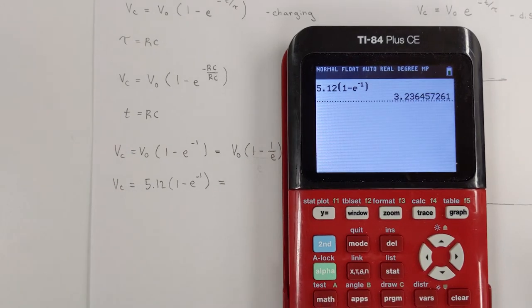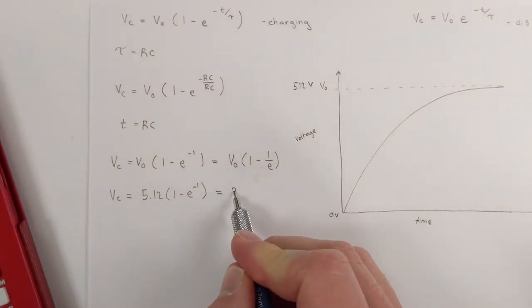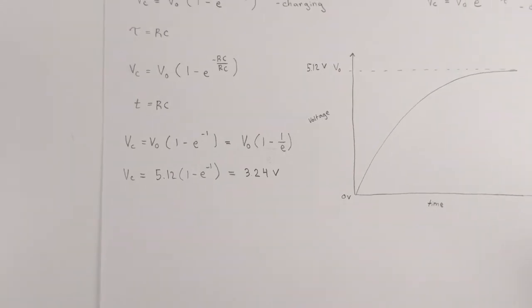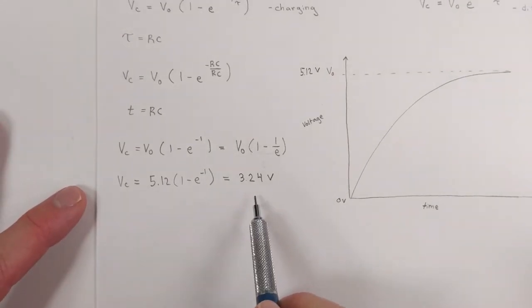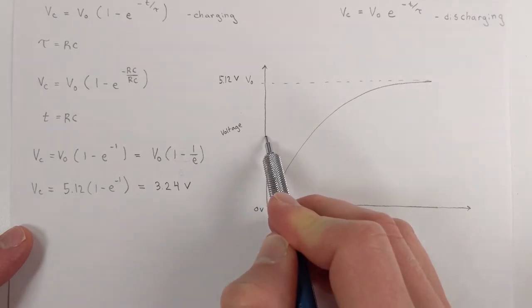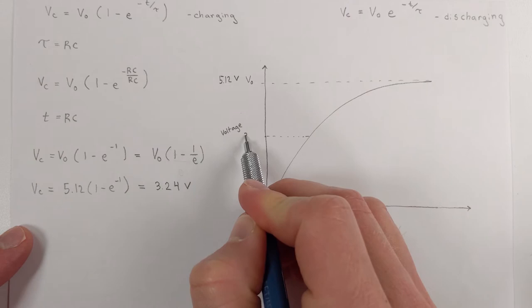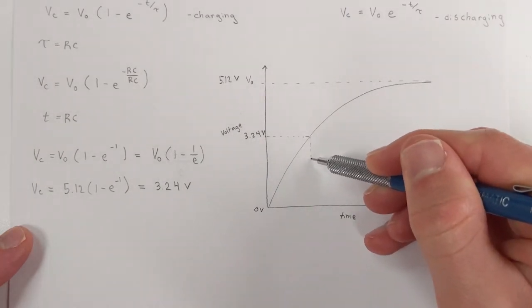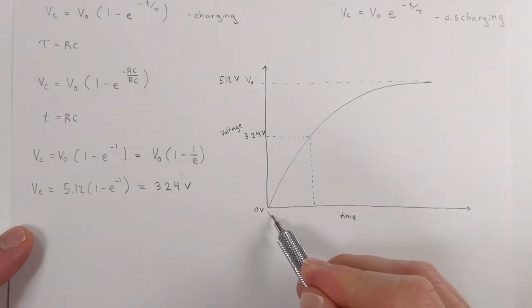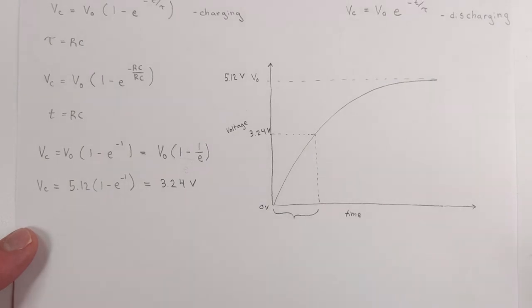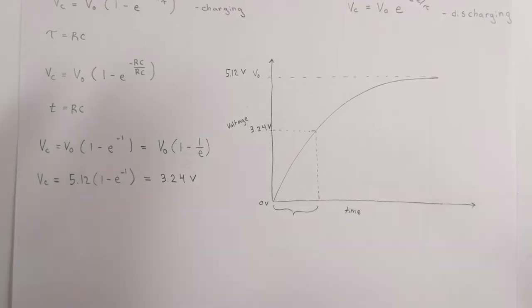That's equal to 3.24 volts. So now we know this voltage, we're going to come over to here. And we want to find, using our oscilloscope, how much time it takes the capacitor to charge up to 3.24 volts. And we want to find this time. So let me show you how you do that.